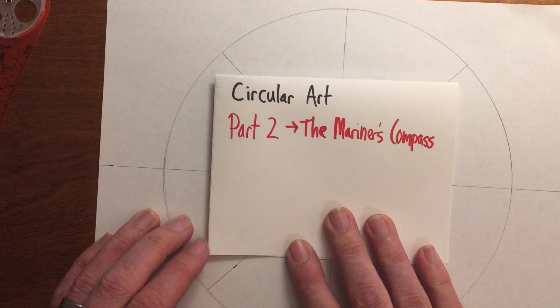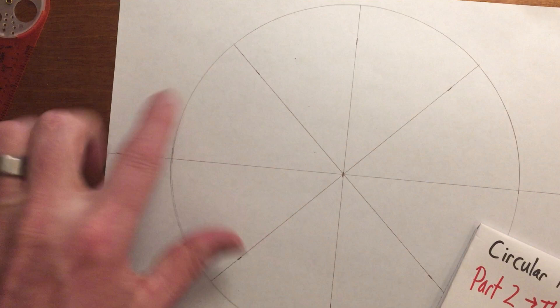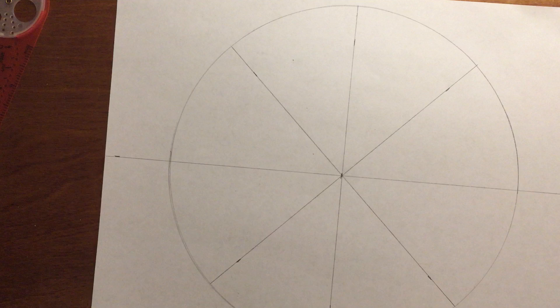Greetings ladies and gentlemen, this is part two of the Mariner's Compass. Part one was just creating a spinner that had eight equal parts, it's a four inch radius circle and we're going to get moving quickly here.